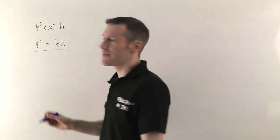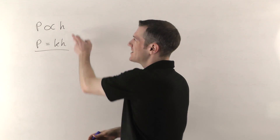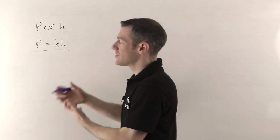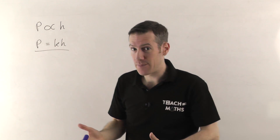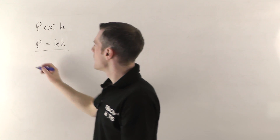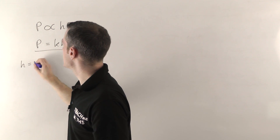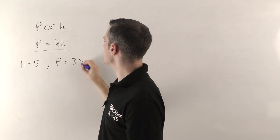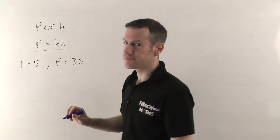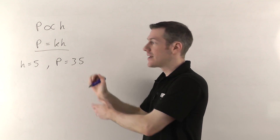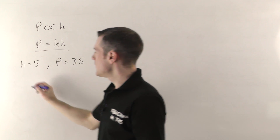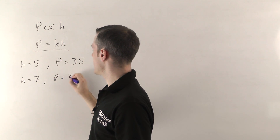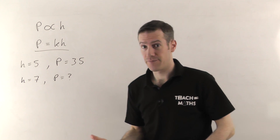So whenever you see the proportional sign, the first thing you do is replace it with equals K times the other thing. As well as giving you this information — possibly in words, possibly with the proportional sign — they will also give you an example. They might say: when you work for five hours, you get paid £35. Then they'll ask: if you worked for seven hours, how much would you get paid?